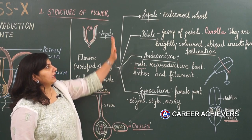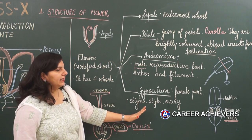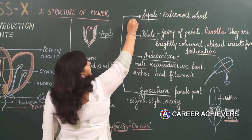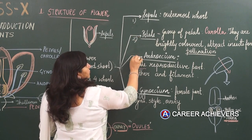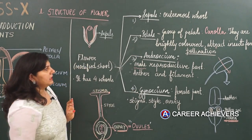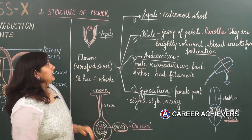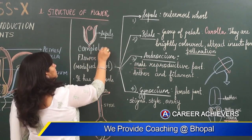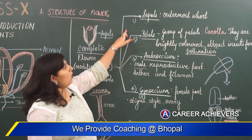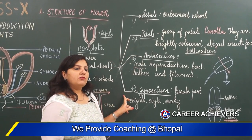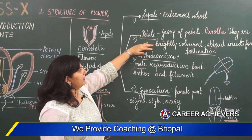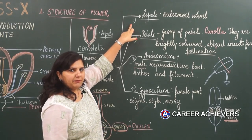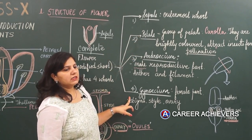The complete structure — sepals, petals, androecium, and gynoecium — combine together to form a flower. Any flower which contains all four structures is referred to as a complete flower. A flower that contains sepals, petals, and androecium only is called a male flower. The one that contains sepals, petals, and gynoecium only is called a female flower.